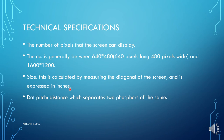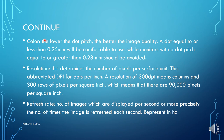Dot pitch is the distance which separates two phosphors of the same color. The lower the dot pitch, the better the image quality — the smaller the distance between two pixels, the better the image quality. A dot pitch equal to or less than 0.25 mm is comfortable to use, while monitors with a dot pitch equal to or greater than 0.28 mm should be avoided. Resolution determines the number of pixels per surface unit, abbreviated as DPI — dots per inch.